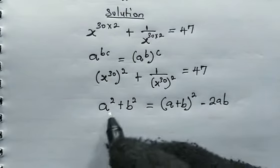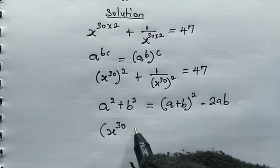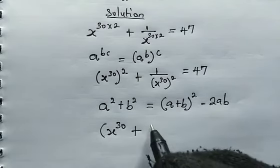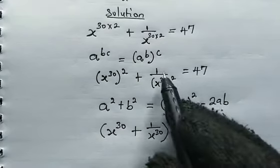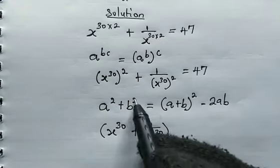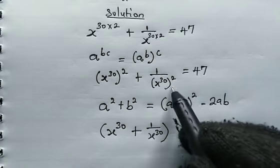So from the left, make use of this. We have x to the power of 30, then plus 1 over x to the power of 30. Remember we have everything here squared, but here we have 1 over something squared. We can express this as 1 all over x all to the power of 30.